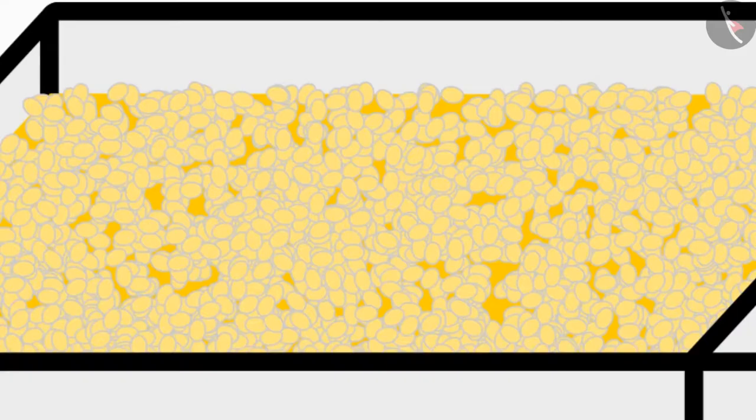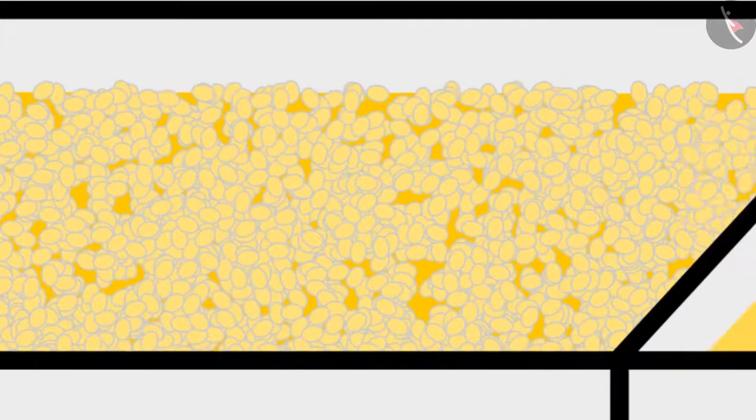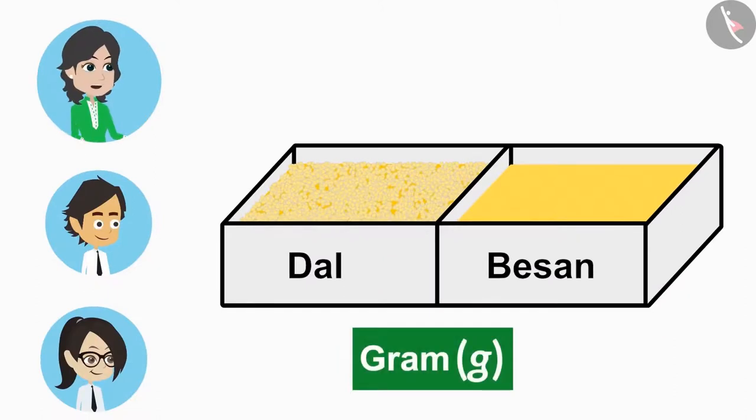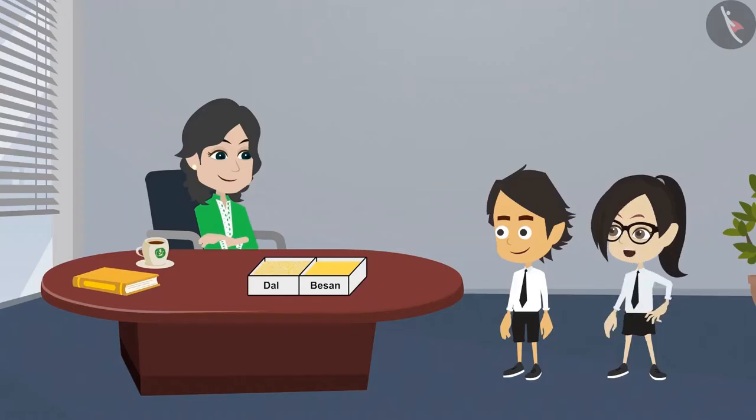Objects like dal which are not easy to count and objects like besan that cannot be counted are measured in grams. This means after measuring besan in grams, we can divide it into two halves.